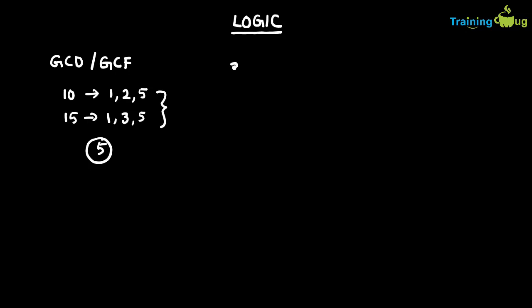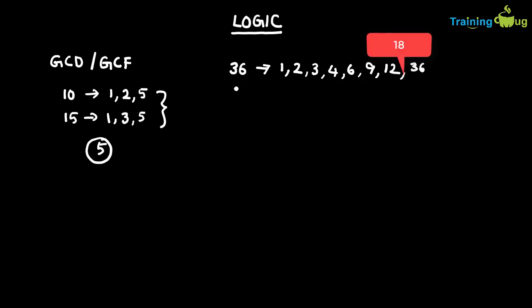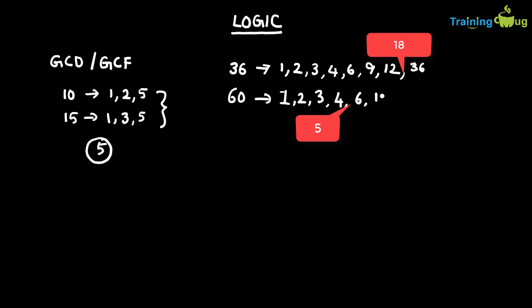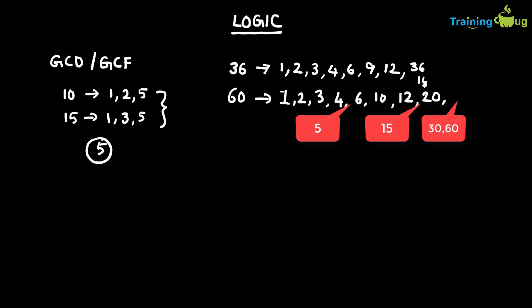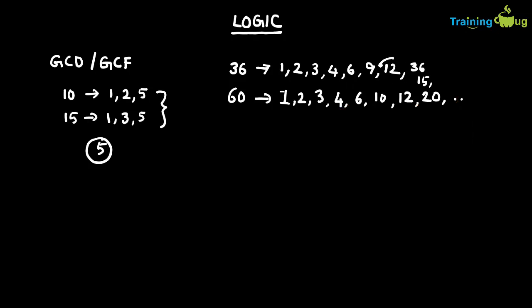Let's take another example: 36 and 60. The factors of 36 are 1, 2, 3, 4, 6, 9, 12, and 36 itself. The factors of 60 include 1, 2, 3, 4, 6, 10, 12, 15, 20, etc. Looking at the common factors of both, the highest common factor or greatest common factor is 12.